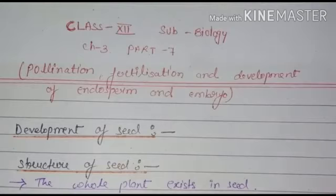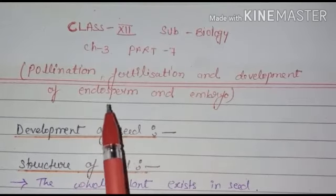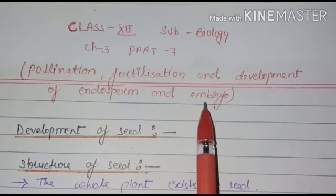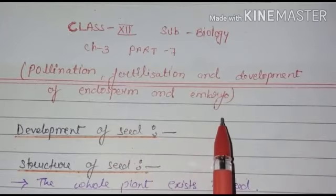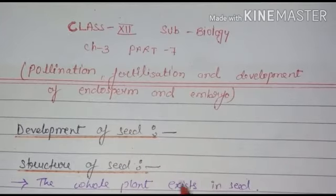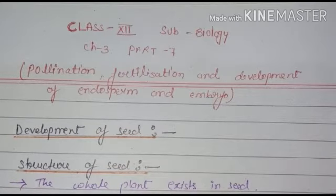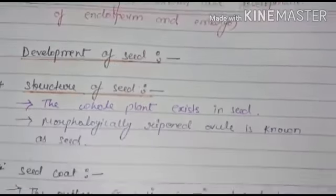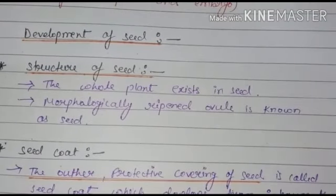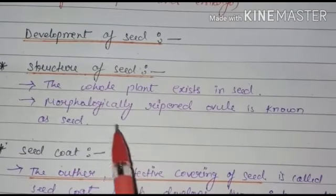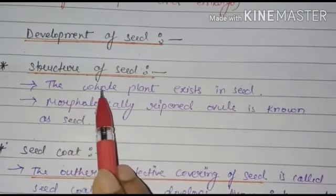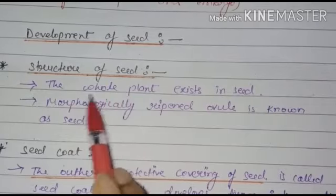Hello students, this is the next video of Chapter 3, Part 7. The chapter is on pollination, fertilization, and development of endosperm and embryo. In the previous video we discussed embryogenesis and development of endosperm. In this video we will discuss the development of seed.